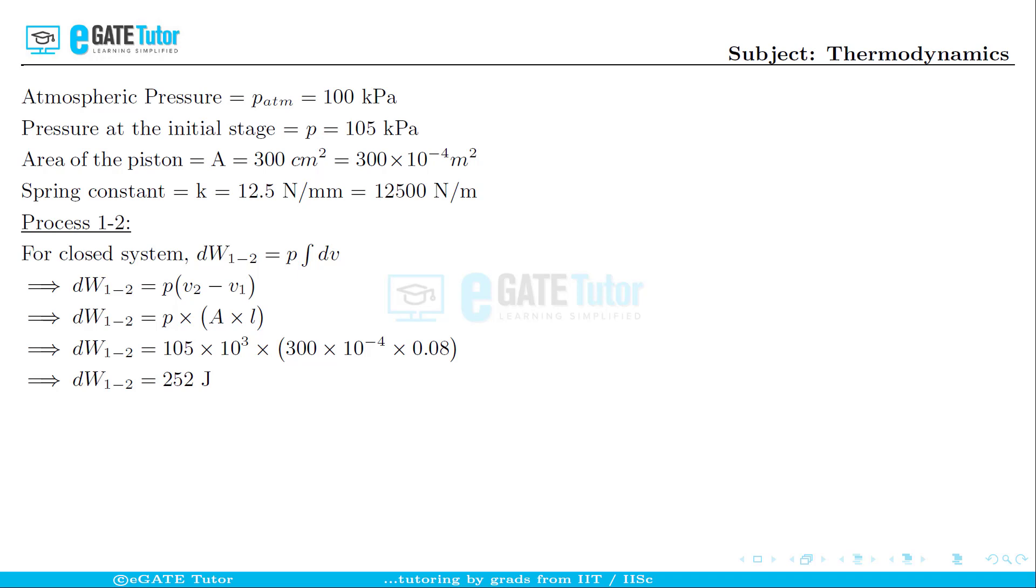Similarly let us move on for between the process 2 to 3. In that process we have two processes going on simultaneously where the piston will displace by 8 centimeters and also it compresses the spring by 8 centimeters parallelly. So the work done in process 2 to 3 is P(v₃ - v₂) + ½kx² which is the strain energy stored in the spring as a consequence of its compression.